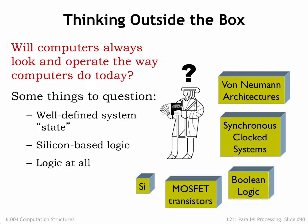Instead of using truth tables and logic functions, some computations are best performed by neural networks that operate by forming appropriately weighted combinations of analog inputs, where the weights are learned by the system as it is trained using example inputs that should produce known outputs. Artificial neural nets are thought to model the operation of the synapses and neurons in our brains. As we learn more about how the brain operates, we may get many new insights into how to implement systems that are good at recognition and reasoning.